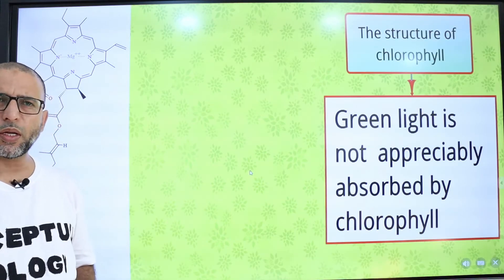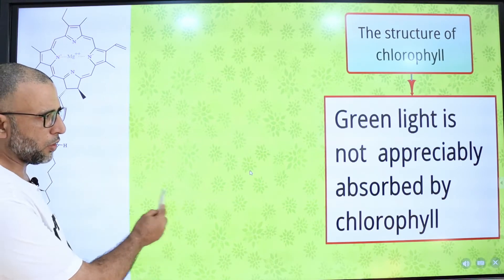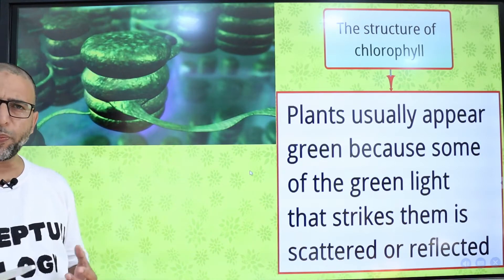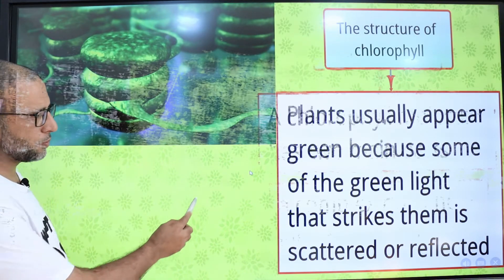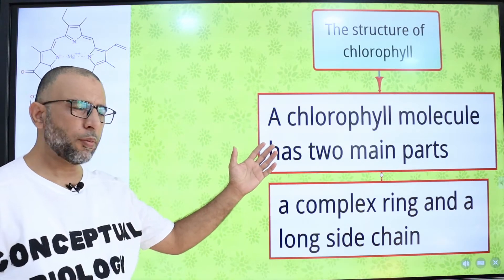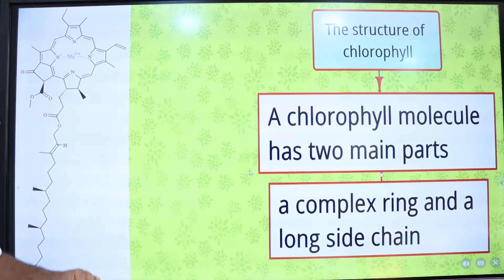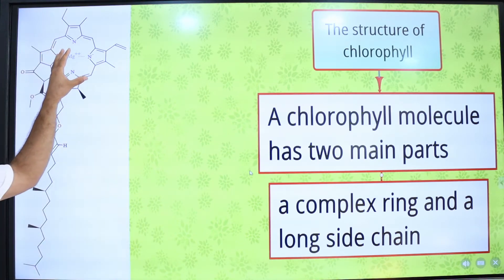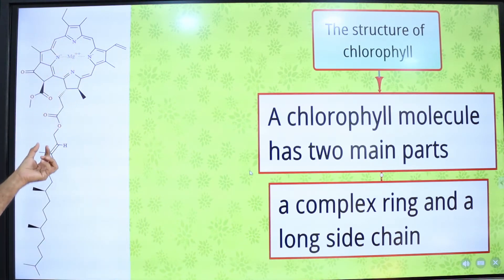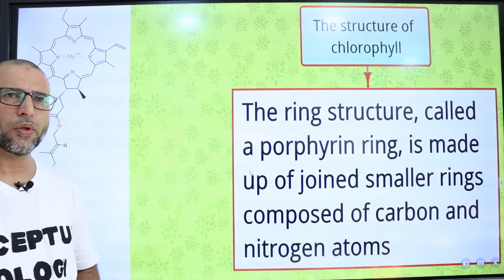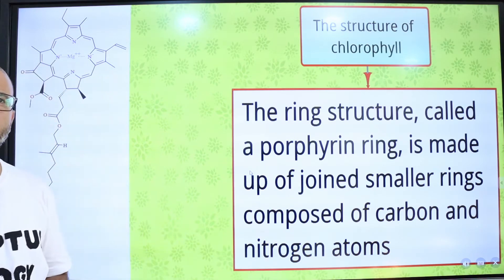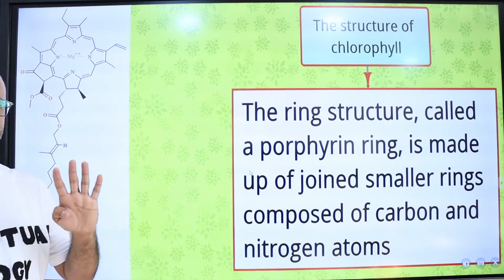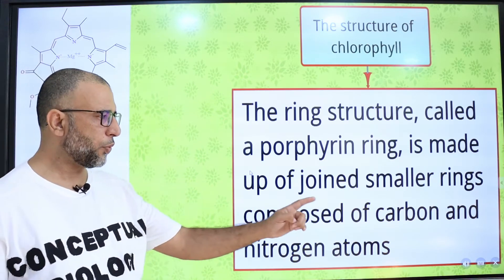Green light is not absorbed by the chlorophyll molecule. Plants appear green because green light is reflected back. A chlorophyll molecule has two main parts: a complex ring called the porphyrin ring, and a long side chain called the phytol tail.